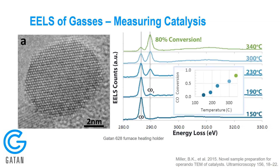The final published example is from my own PhD work with Peter Crozier. In this case, we're using EELS not to measure the sample, but to measure the composition of the gas in the microscope in an environmental TEM. We're converting CO into CO2 using the catalyst sample in the microscope. By measuring the gas composition, we could quantify the activity of this catalyst in the microscope while simultaneously observing the structure in the TEM — using EELS to measure the catalytic activity rather than the sample itself.